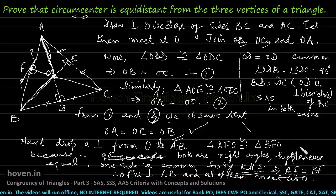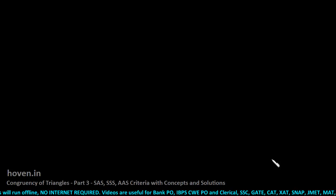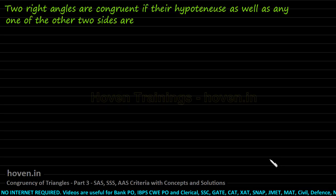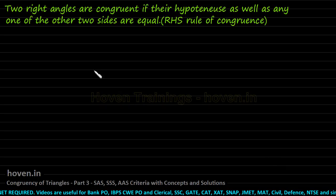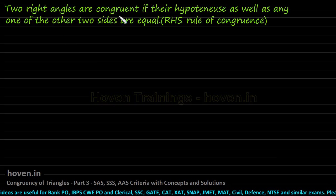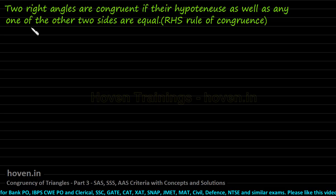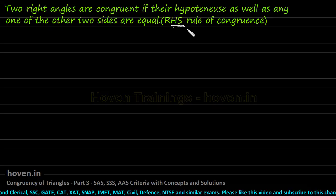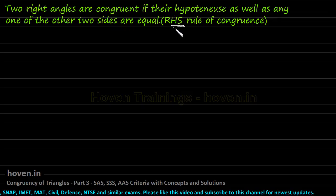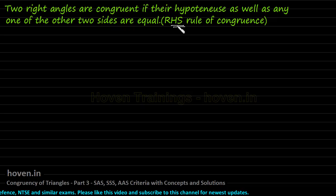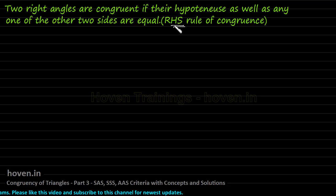Let us move to our next part. Two right triangles are congruent if their hypotenuse as well as any one of the other two sides are equal — this is called the RHS rule of congruency. We have in fact just used it, and while I used it I also told you that SSS could have been used there instead of RHS, but RHS can be proved stand-alone also.